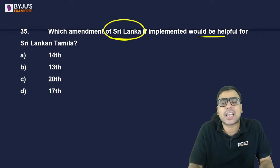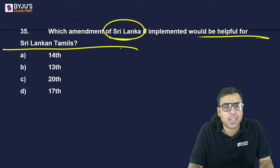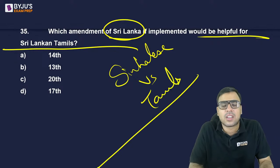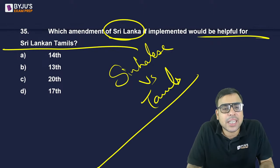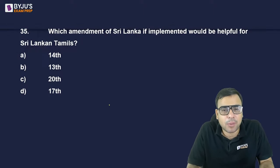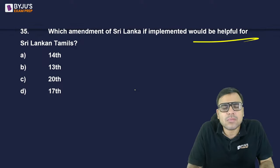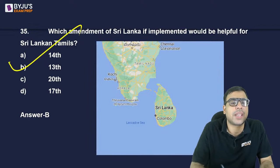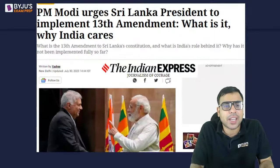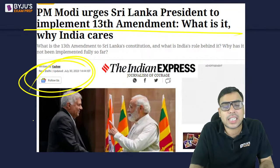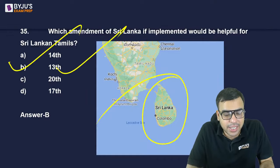Which amendment of Sri Lanka, if implemented, would be helpful for Sri Lankan Tamils? There has been a conflict between Sinhalese and Tamils in Sri Lanka. The right answer is B — the 13th Amendment. PM Modi urged the Sri Lankan President to implement the 13th Amendment, which would give Tamils some power and autonomy. This is a very famous topic.